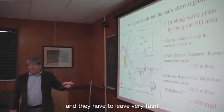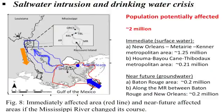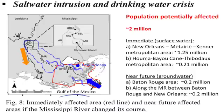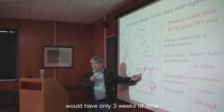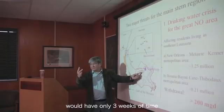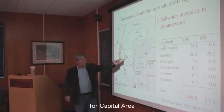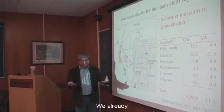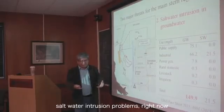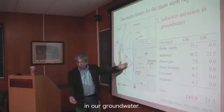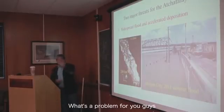They have to leave very fast. If the Mississippi River switches to the Atchafalaya, Gulf water will enter along the river all the way up to Baton Rouge. These people would have only three weeks to leave. For the Baton Rouge capital area, we are already starting to have saltwater intrusion problems in our groundwater right now.